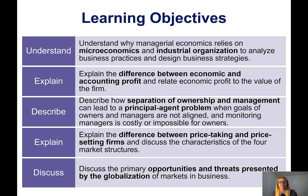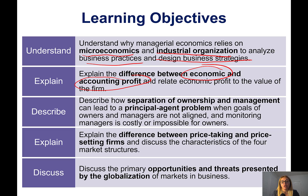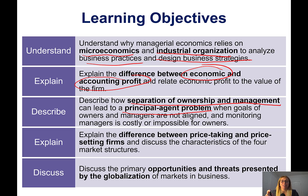Here are the learning objectives of this chapter. We'll understand why managerial economics relies on microeconomics and industrial organization to analyze business practices and design business strategies. We'll learn to explain the difference between economic and accounting profit, and how separation of ownership and management can lead to a principal-agent problem when the goals of owners and managers are not aligned and monitoring manager behavior is hard. Then we'll learn about the differences between price-taking and price-setting firms, and finally we'll talk about globalization.